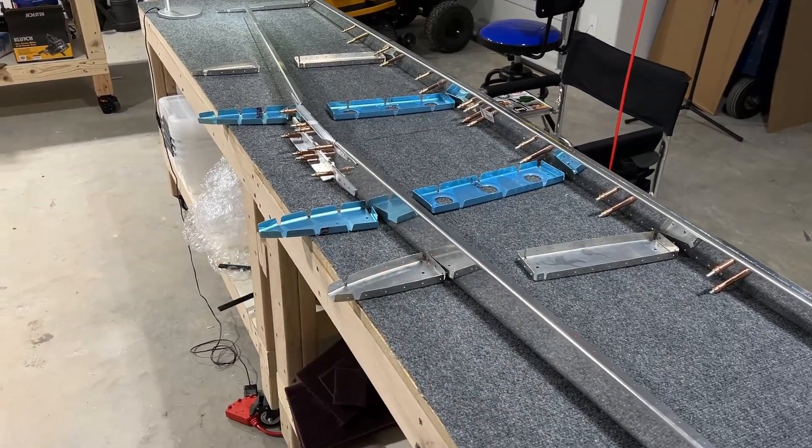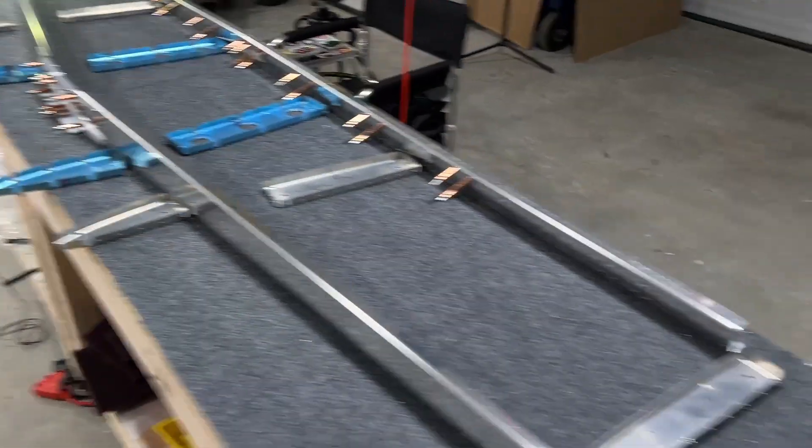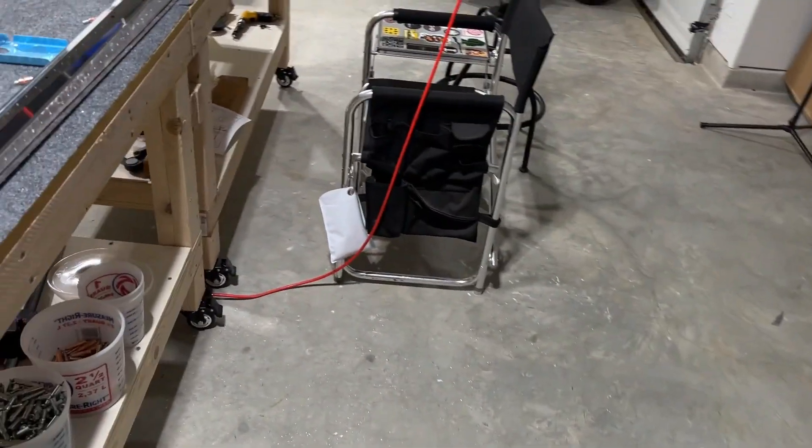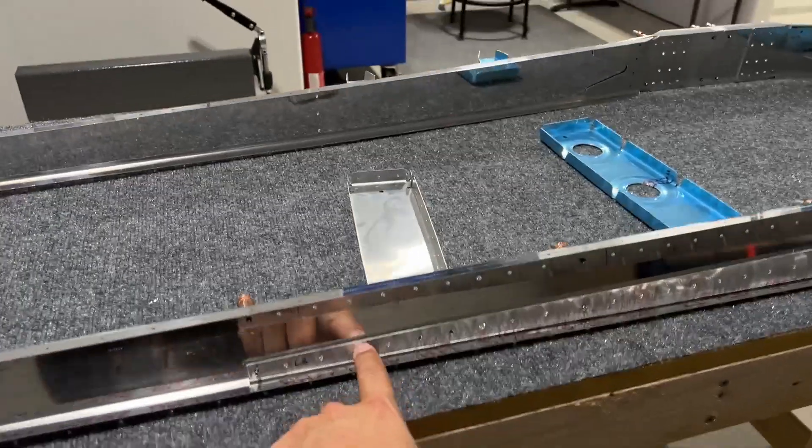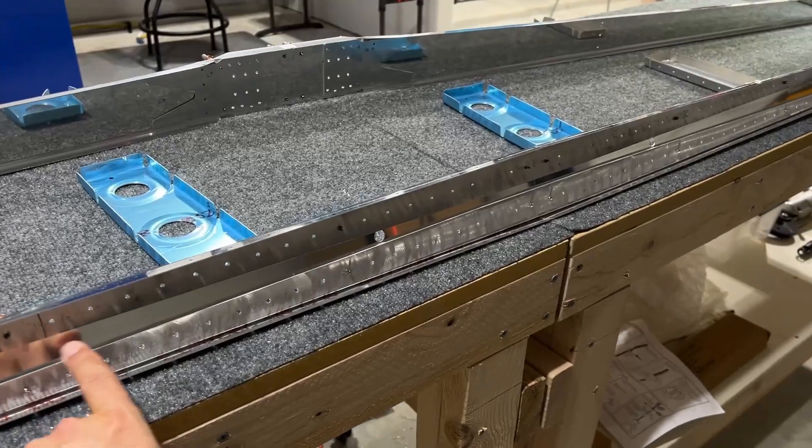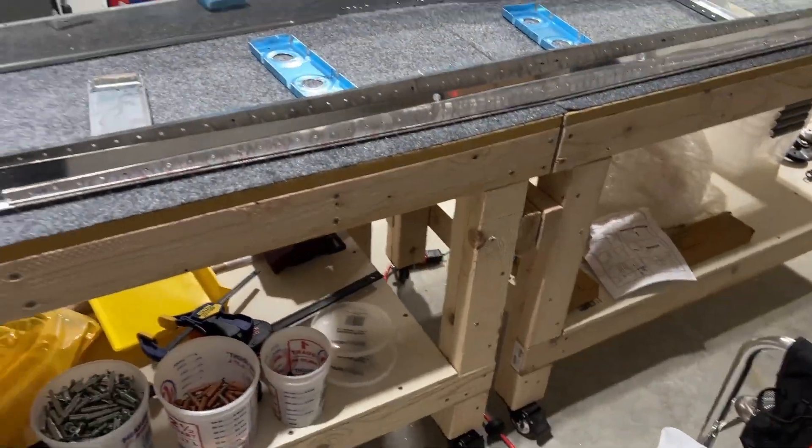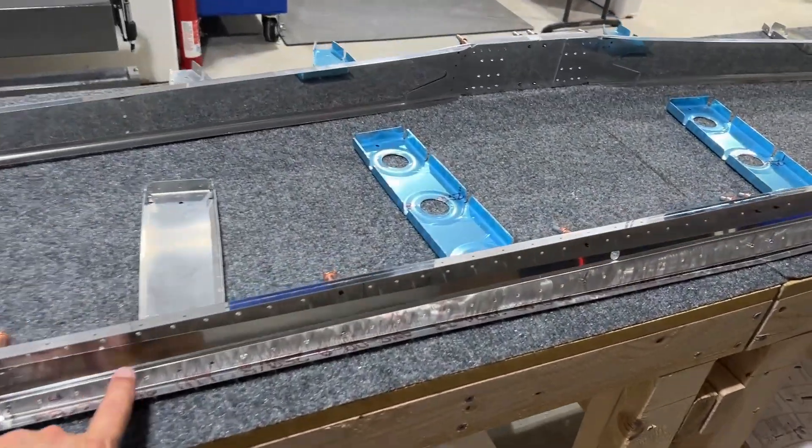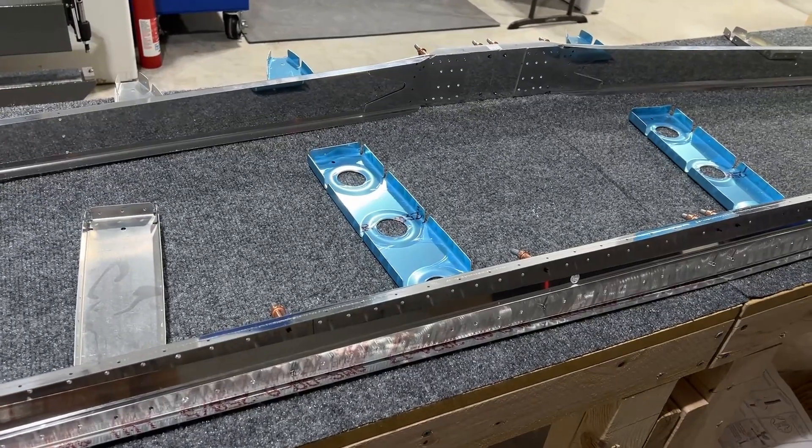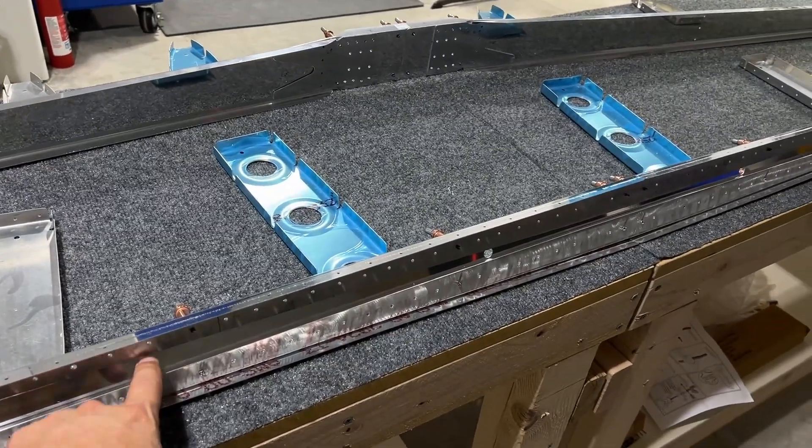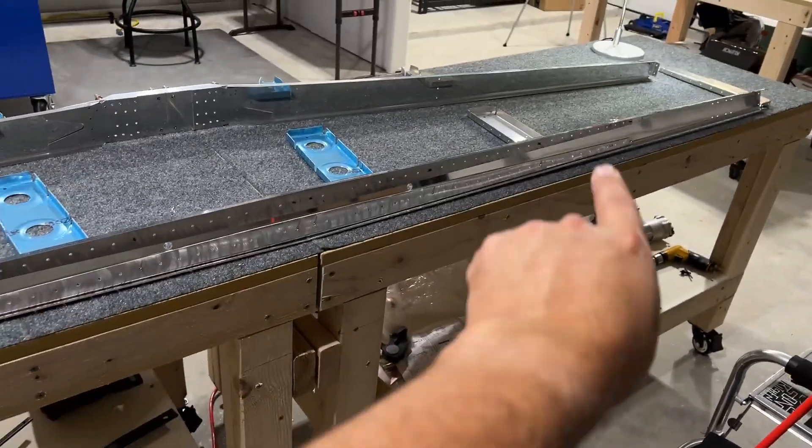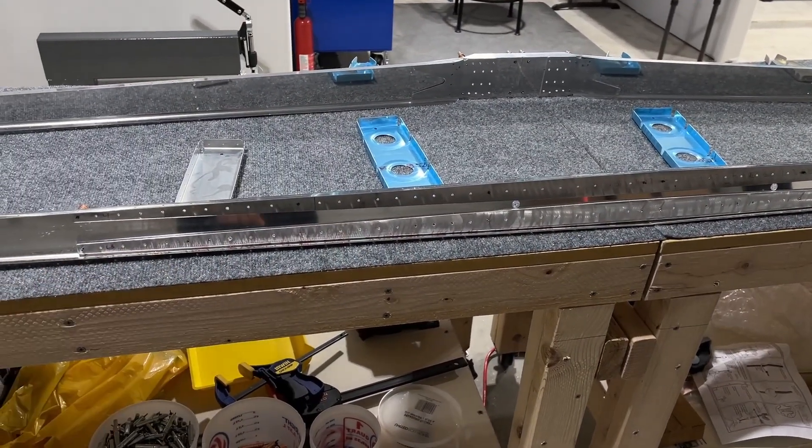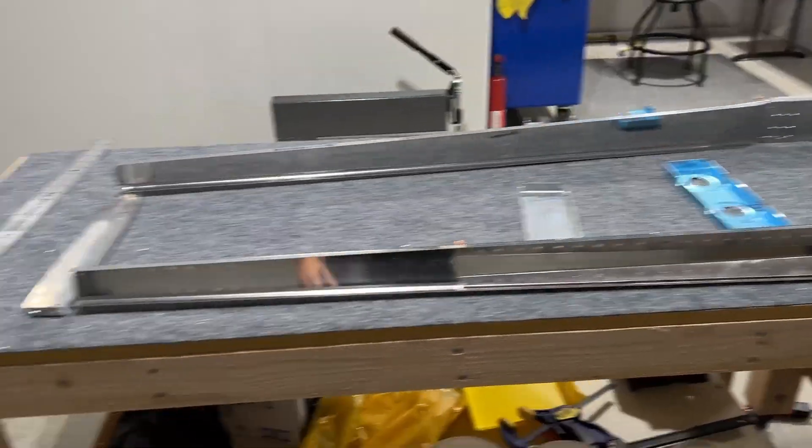These reinforcement bars on the rear spar had to have all the edges radiused so that they would fit snug against the piece they're mounting to and then polished. And lots of match drilling all of these holes and final size drilling them.